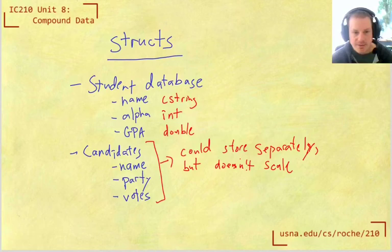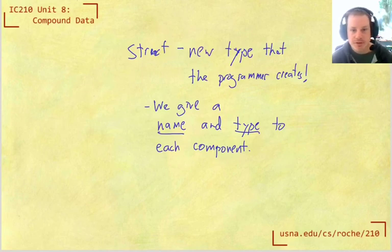Right, in the case of a candidate, the name would be a string. The party, well, we have to think about maybe that would be a string, maybe it would be an int, maybe it would be a bool if you're in a two-party dominated system like the US, and the votes would probably be an int. That's what we're going to define when we have to define our new type of the struct.